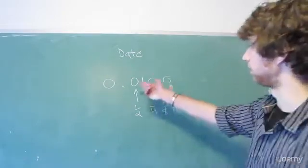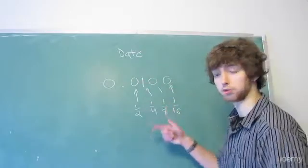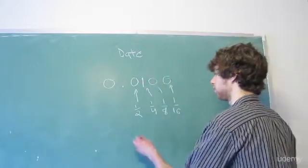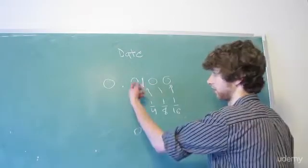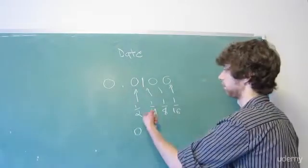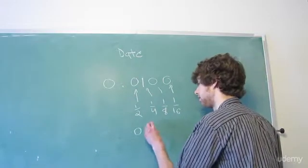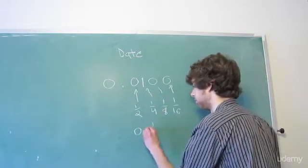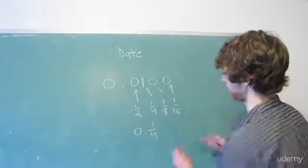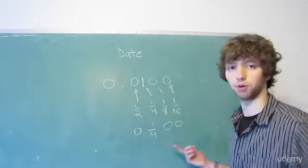So, right now, the way we have it, we would take one-half, multiply it by zero to get zero because we don't have anything there. We take one-fourth, multiply it by one. Since we have it there, we'd get one-fourth. Zero, zero. We add those up, we get one-fourth.